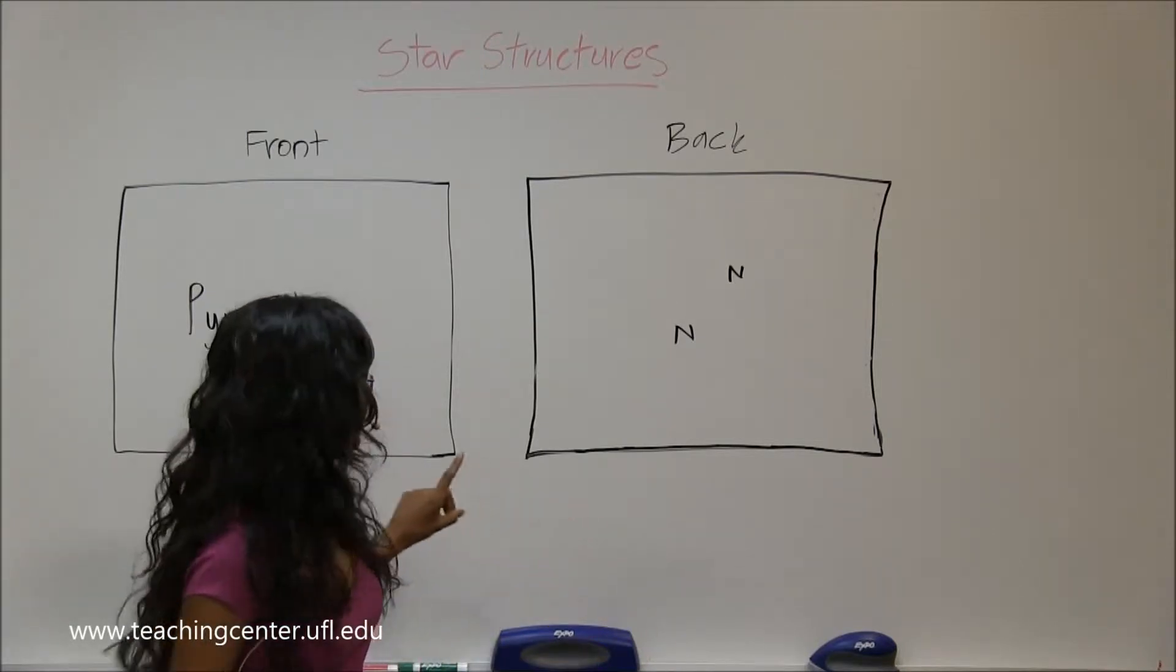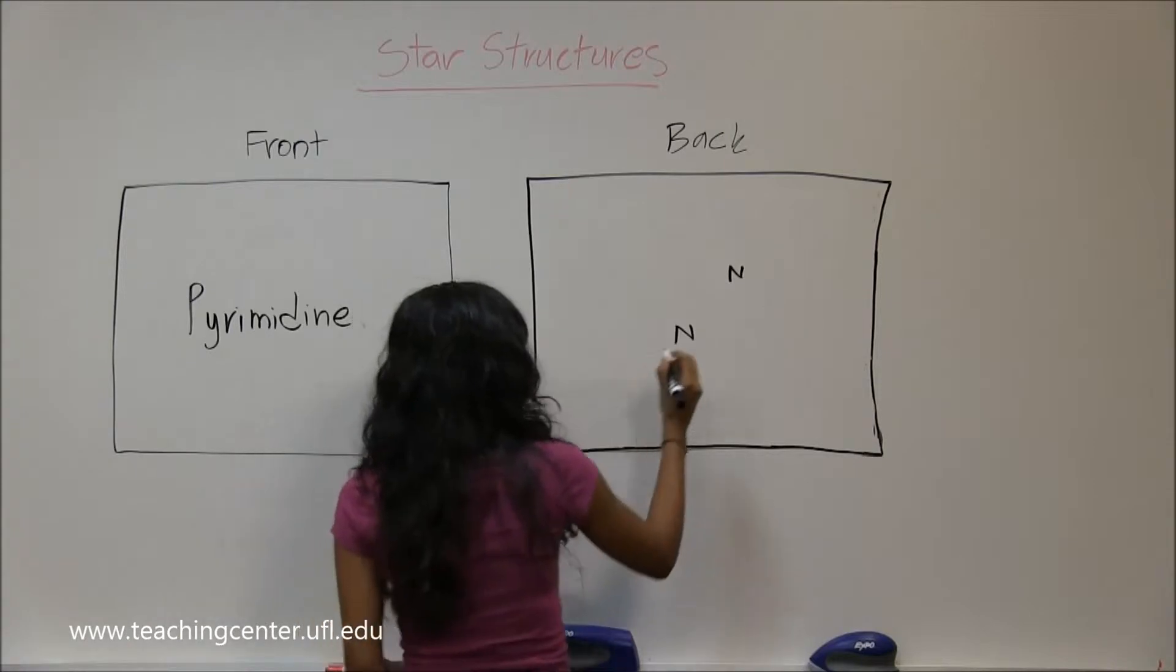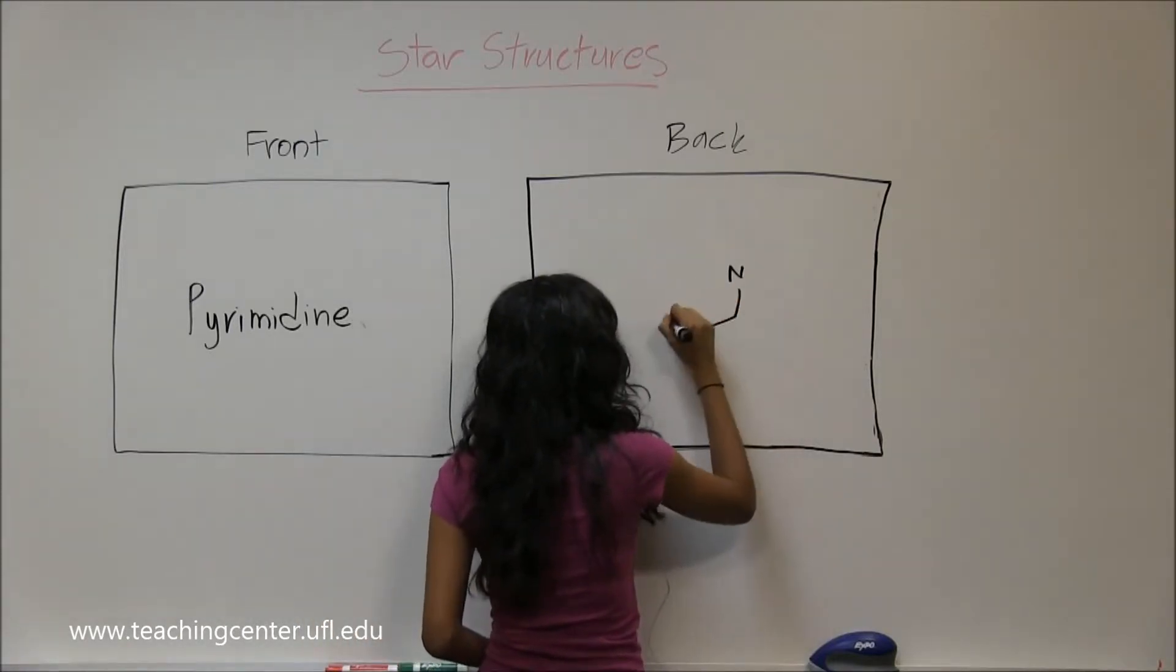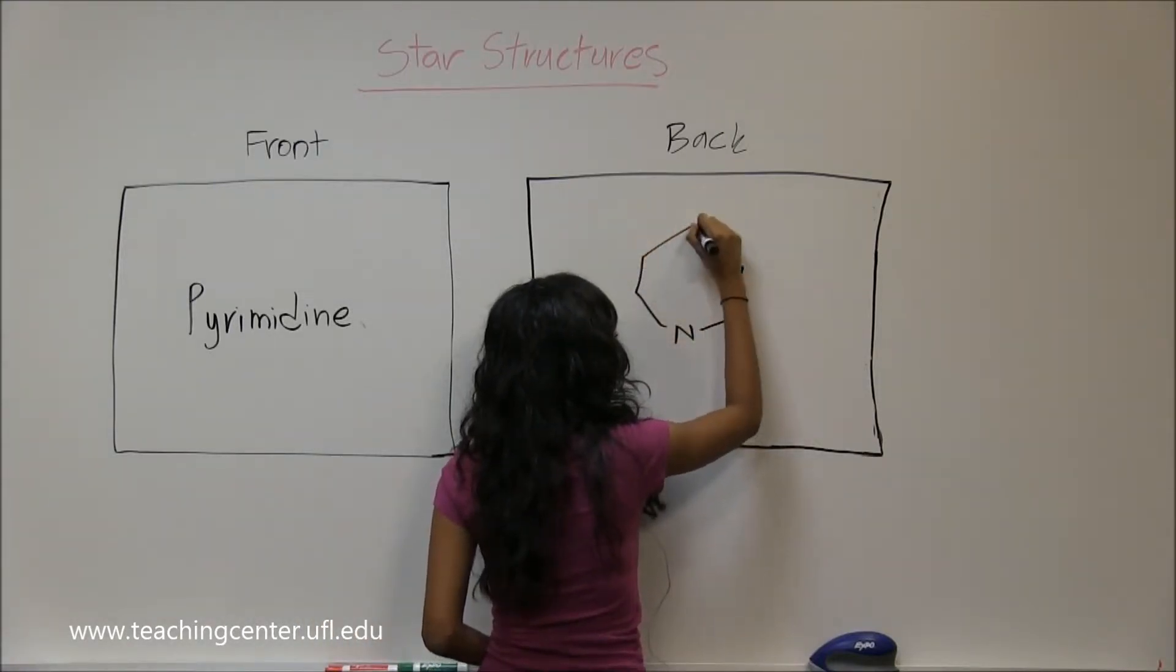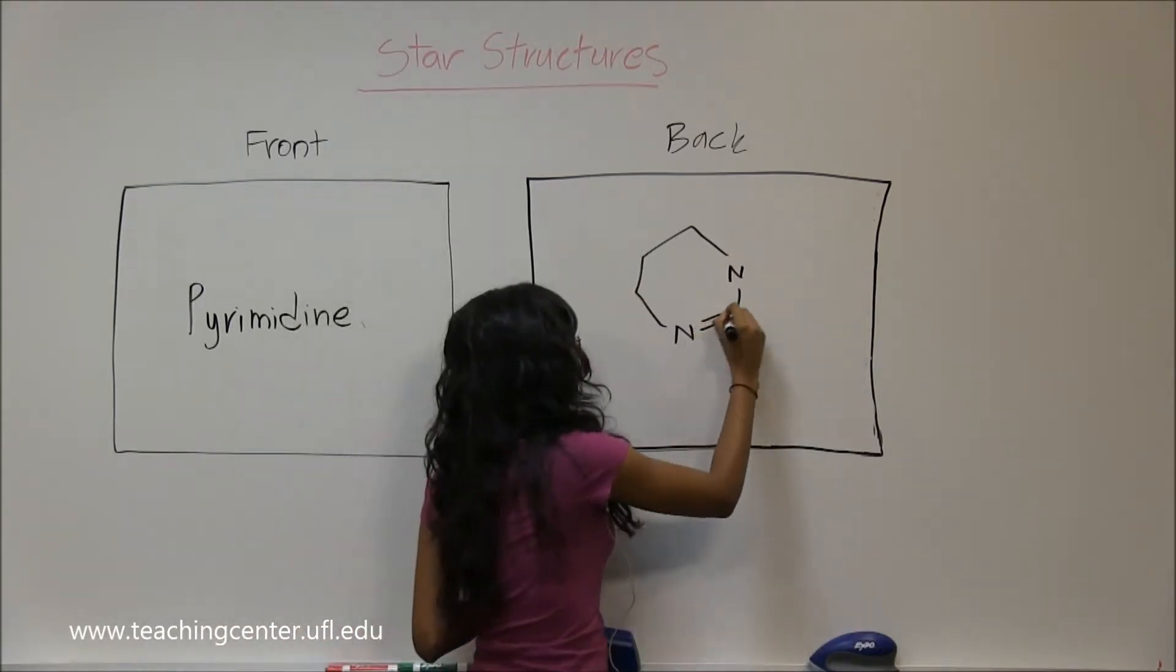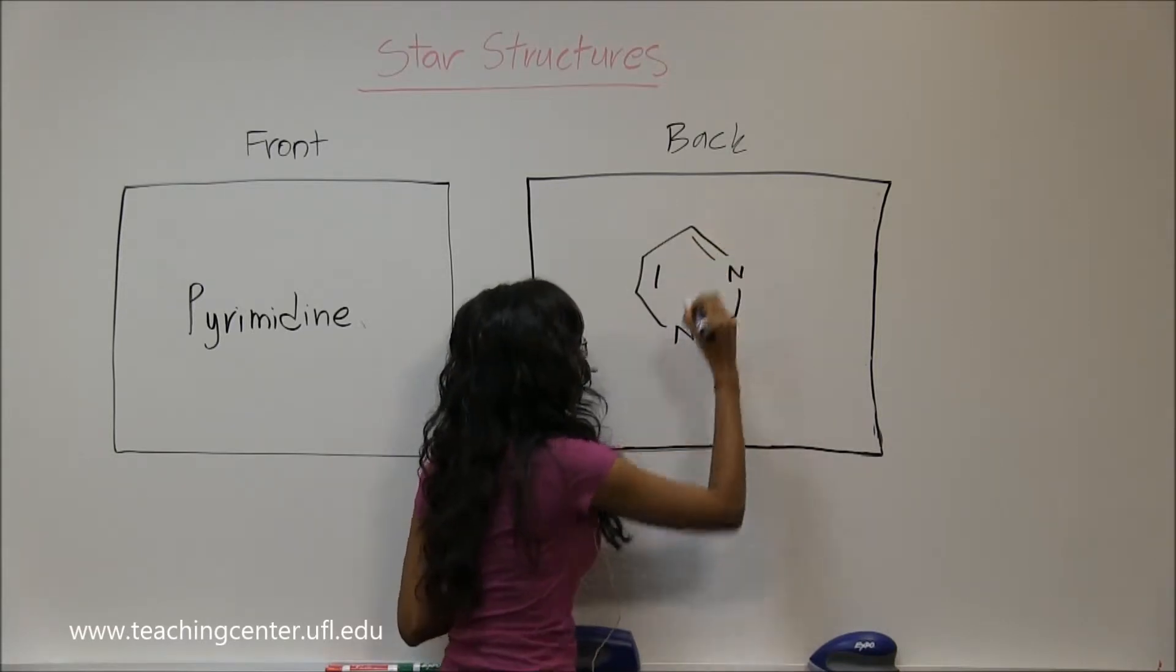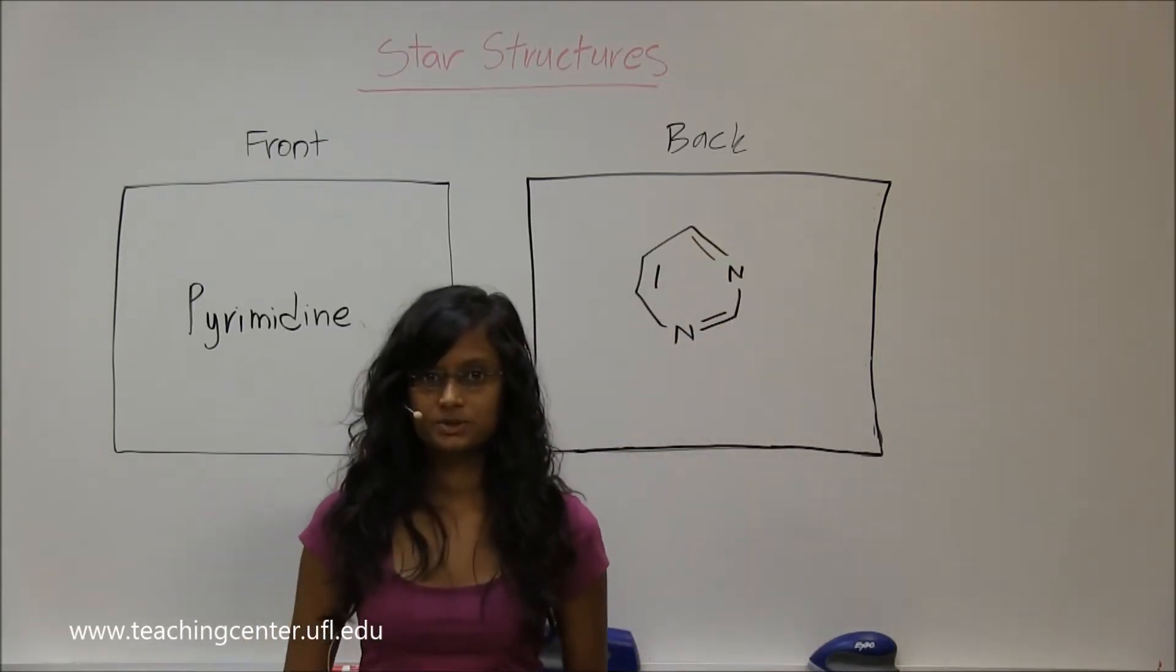So this is pyrimidine, which is only one ring and you have two nitrogens and they're attached in a six-member ring. And they are aromatic because they have pi bonds attached to each other.